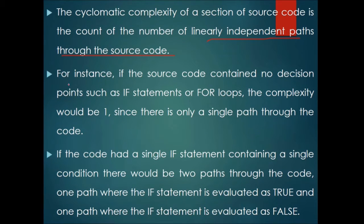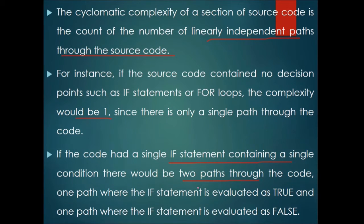For linearly independent paths through source code: if the code contains no decision points such as if or loops, the complexity is 1 since there is only a single path. If the code has a single if-statement with a single condition, there are two paths — one where the if-statement is evaluated as true and one where it is evaluated as false.